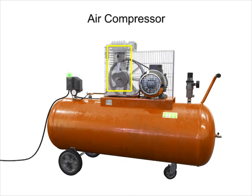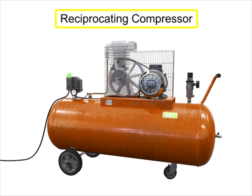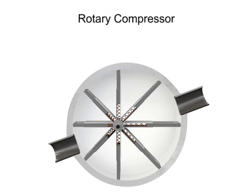Compressors with a piston as the compressing element are called reciprocating compressors. Compressors can also be made with vanes or impellers. These types of compressors are called rotary compressors.